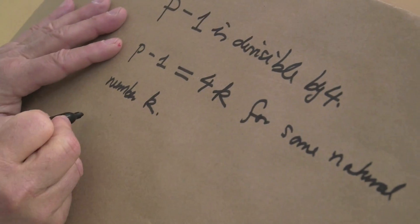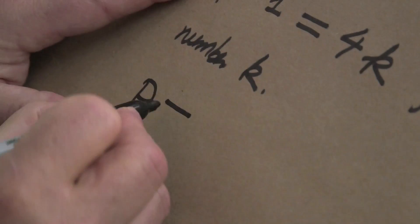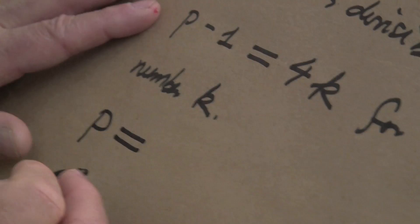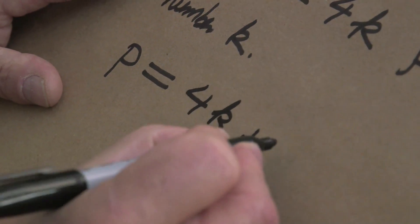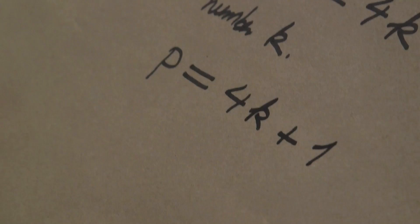Now we reformulate this equation a little bit. We add 1 to both sides, and so we get the equation for p: p is equal to 4k plus 1. Let me remember, it has this form.